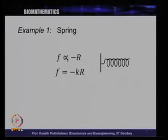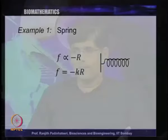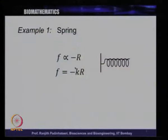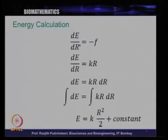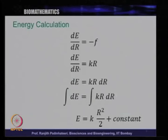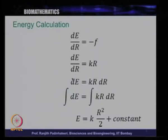We know that F = -kr, where k is the spring constant, which depends on the material property of the spring. Going back to the relation dE/dr = -F, if we substitute F = -kr, we get dE/dr = kr, or dE = kr dr. Multiplying both sides by dr and integrating, we get: integral of dE = integral of kr dr.